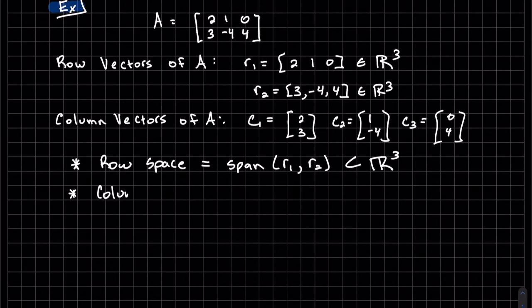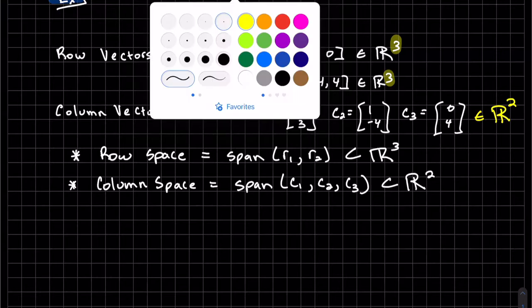The column space. And we can see our columns are subsets of R2, where we have A is a 2 by 3. And these are elements of R2.